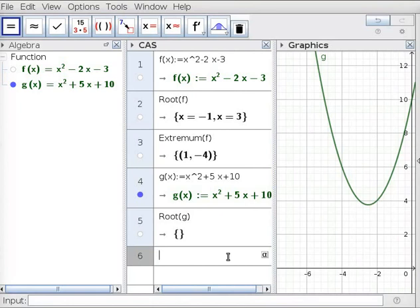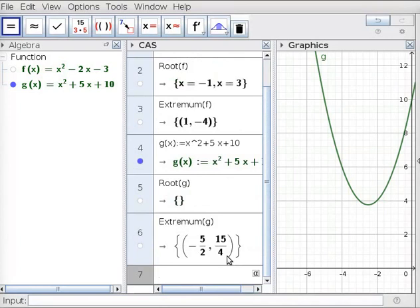In line 6 of CAS view, type extremum(g). Press Enter. The extremum appears below in the same box in curly brackets. Note that this is the minimum vertex of parabola g in graphics view.